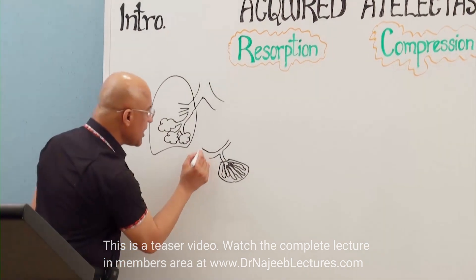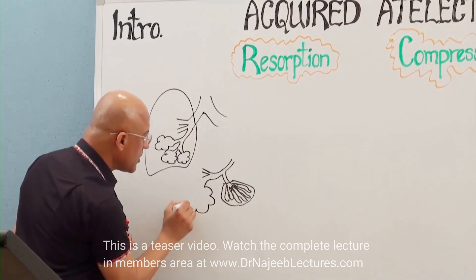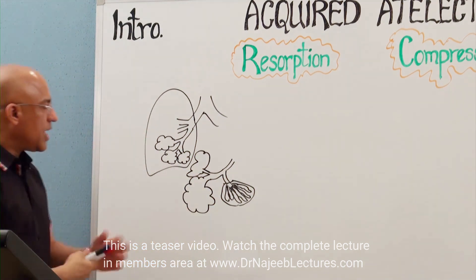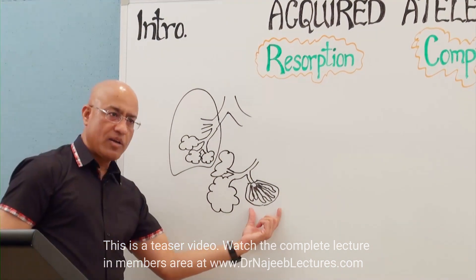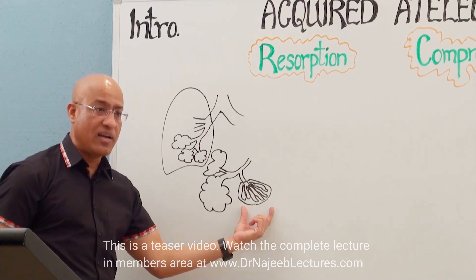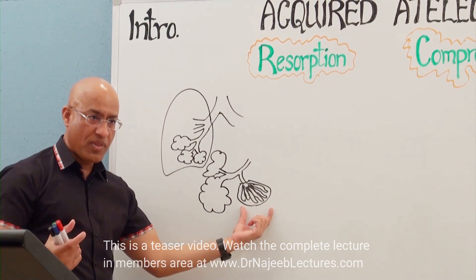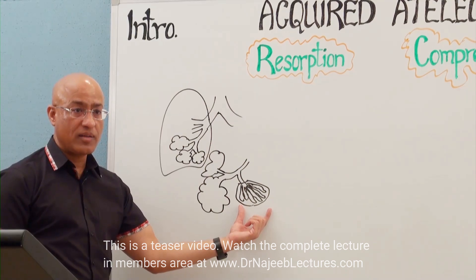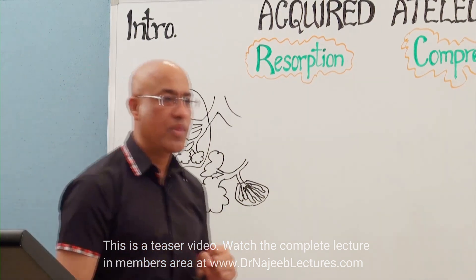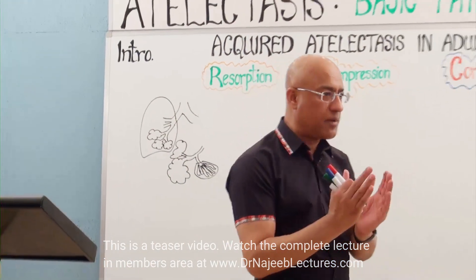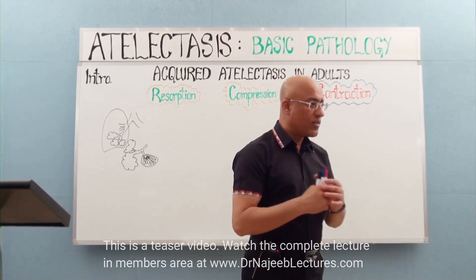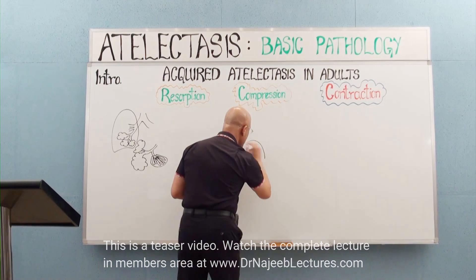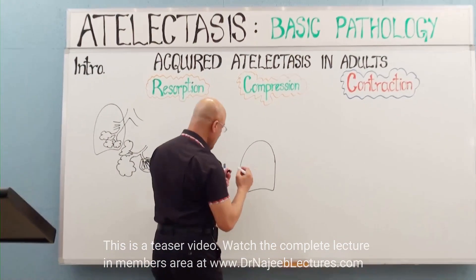When a small area, a bigger area, or sometimes the whole lung undergoes collapse, what complications can occur? This is the most important thing we will learn today — what are the problems related with lung collapse.